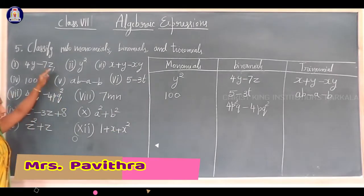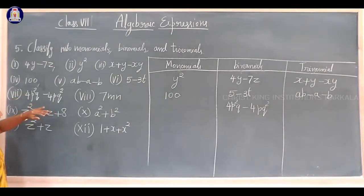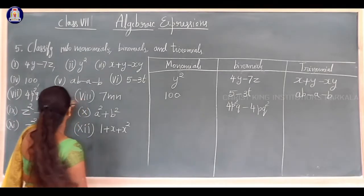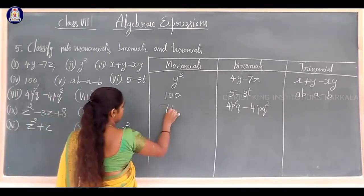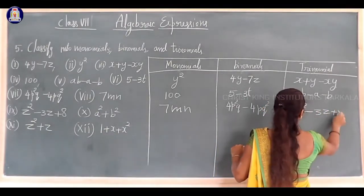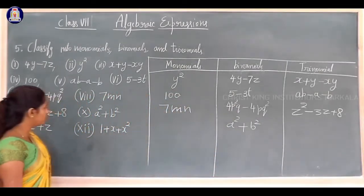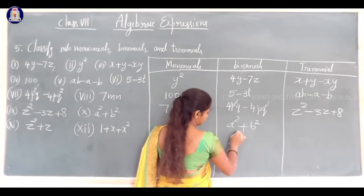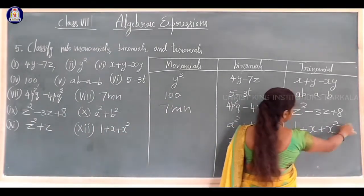This is very simple to classify — just observe the given expression. If the expression has two terms, it is a binomial; three terms, a trinomial; one term, a monomial. Continuing: a squared plus b squared is a binomial. z squared minus 3z plus 8 is a trinomial. And 1 plus x plus x squared is a trinomial — three terms.